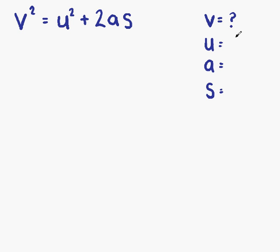U, the initial speed, is 10 metres per second. A, the acceleration, is 5 metres per second squared, and the displacement, S, is 150 metres.